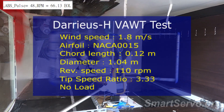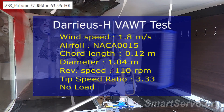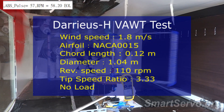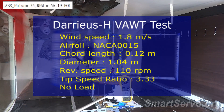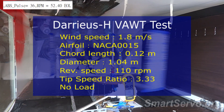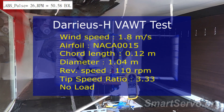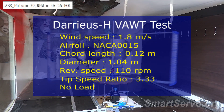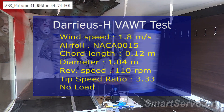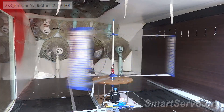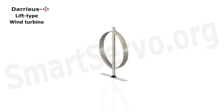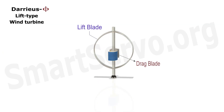The dimensions of the Darrieus wind turbine in this experiment are shown in the picture. At a wind speed of 1.8 meters per second, the wind turbine can reach a tip speed ratio of 3.3, but it is difficult to start by itself. Therefore, lift blades are often paired with drag blades to improve startability.